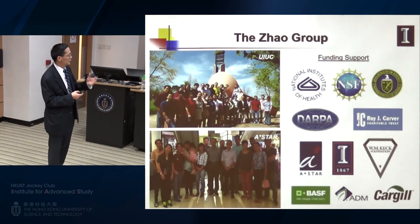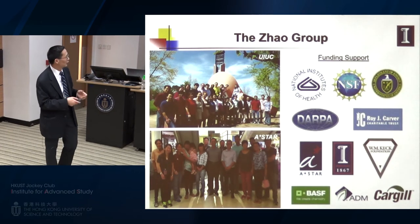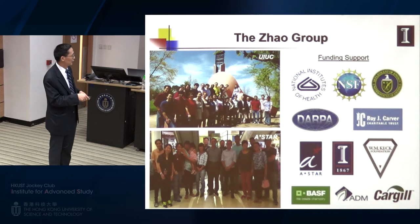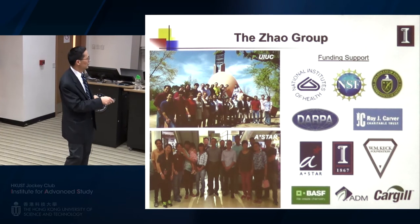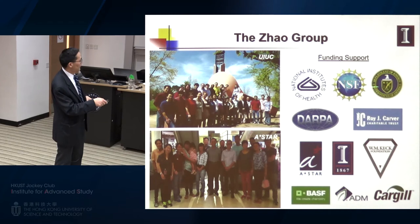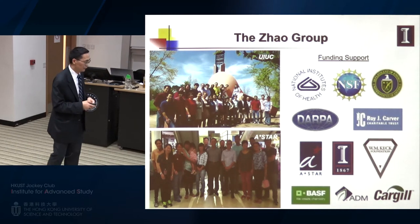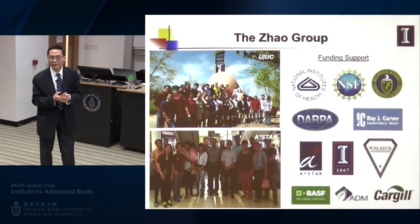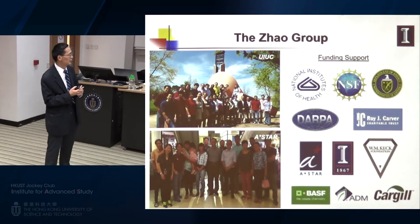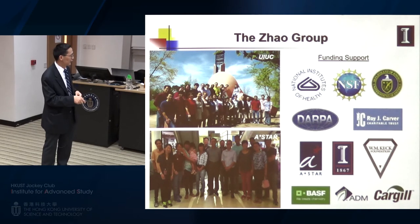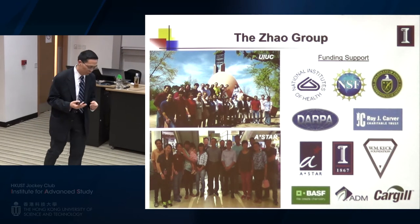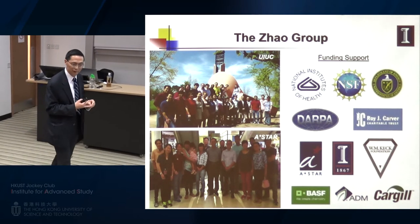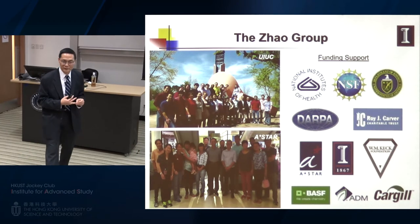In summary, directed evolution is a very powerful tool for engineering biological systems at different scales. I showed the development of several directed evolution tools — some for protein engineering, some for pathway engineering, and some for genome engineering. My current effort is mostly focused on genome engineering, thanks to CRISPR tools and robotic systems. I want to thank the students who did most of this work, and my funding agencies from various federal agencies and companies in the US.